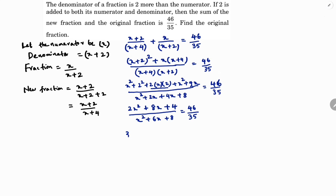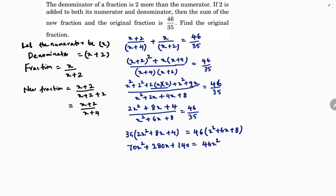Cross multiplying: 35 times (2x²+8x+4) equals 46 times (x²+6x+8). This gives 70x² + 280x + 140 equals 46x² + 276x + 368.